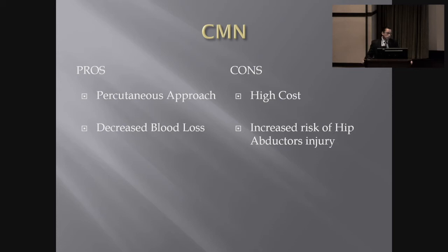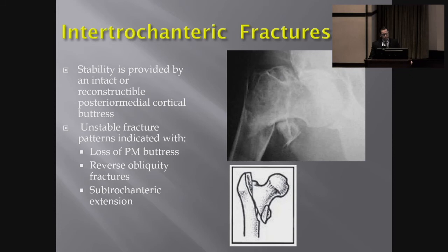For the nail version, pros include percutaneous approach — incisions are very small, blood loss is small, and operative time can be shorter with experience. Cons include higher cost and potential impact on the hip abductors, which can get in the way of the patient recovering mobility. Intertrochanteric fracture stability is based on the posterior medial buttress. Depending on how much comminution or fragmentation is present, that will determine how stable the fracture will be when you reduce it.